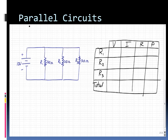And let's start off by dropping in what we already know. We know our total voltage is 10, and we have three resistors of 30 ohms each.